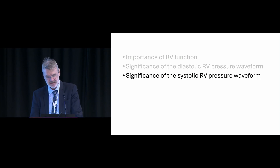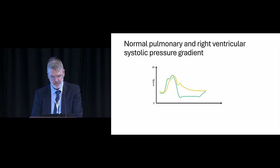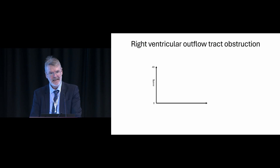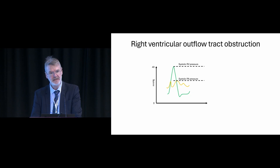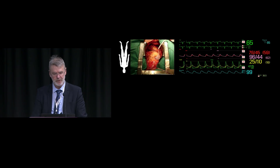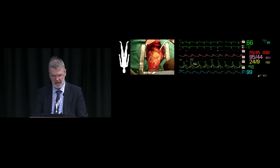The next step is the significance of the systolic RV pressure waveform. Normally there may be a small gradient between the systolic RV pressure and the systolic PA pressure, typically less than or equal to 6 mmHg. In some patients you can observe a gradient where the systolic RV pressure is higher than the systolic PA pressure. We define an abnormal gradient as more than 6 mmHg.